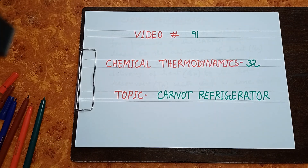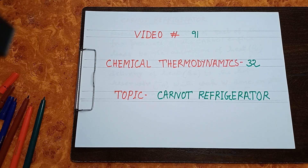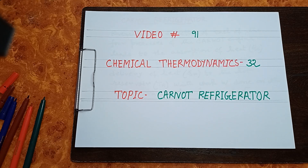Hello viewers, welcome to video number 91 of the channel Mala Chemfiri. Video number 91 is the 32nd episode of Chemical Thermodynamics. The topic of this episode is Carnot Refrigerator. So let's start.